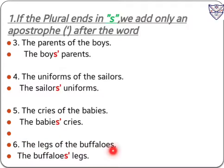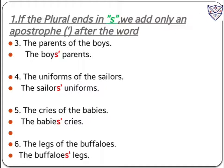To summarize rule one for plural form: if the plural ends in s, we add only an apostrophe after s to show the possessive case. If a word ends in s, it is in plural form, so we put only an apostrophe after s to show the possessive case form.